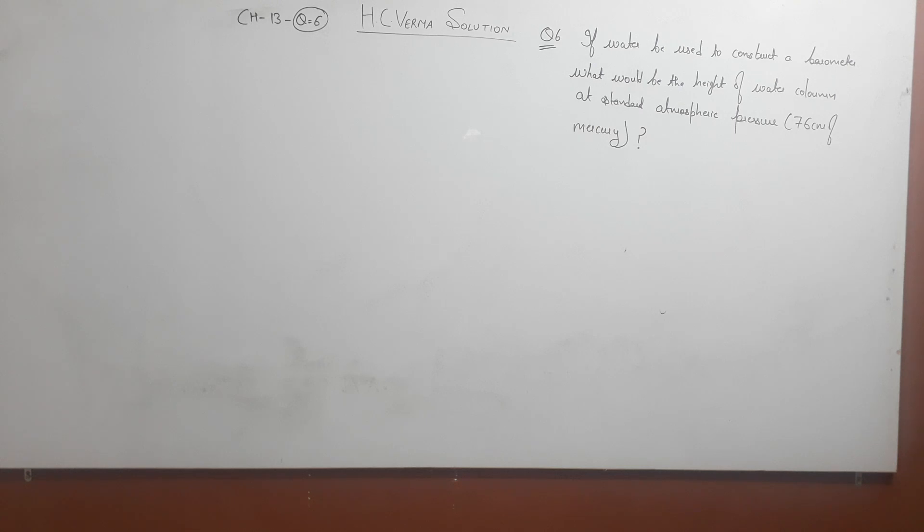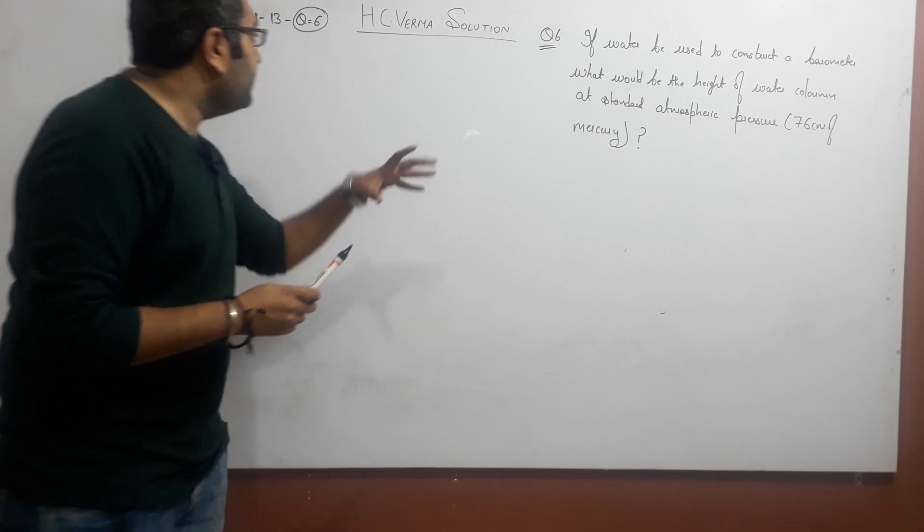Hello guys, welcome to the channel. Chapter number 13, HC Verma, Fluid Mechanics, question number 6: If water be used to construct a barometer, what would be the height of the water column at standard atmospheric pressure? The pressure is given as 76 centimeters of mercury.